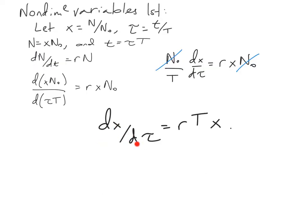Looking through this equation, x is dimensionless, tau is dimensionless, x is dimensionless, and rT is a dimensionless group. So rT is dimensionless.